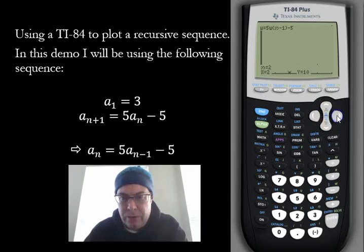The next one is for n equals 2, that's going to be 10. For n equals 3, it's 45. For n equals 4, 220. And then for n equals 5, we're going to get 1095. So there's the 5 points for this recursive sequence.